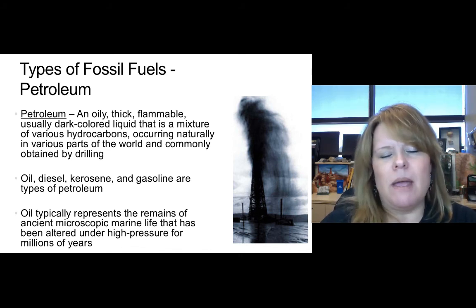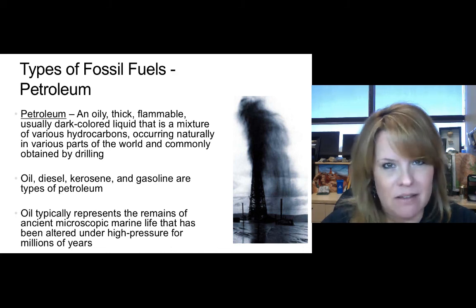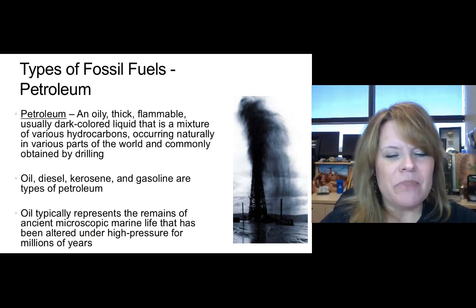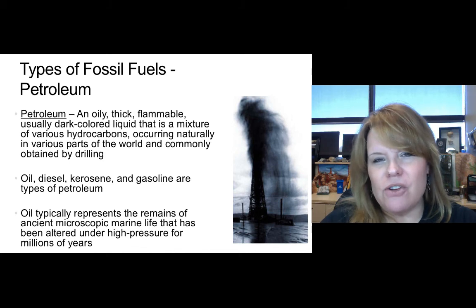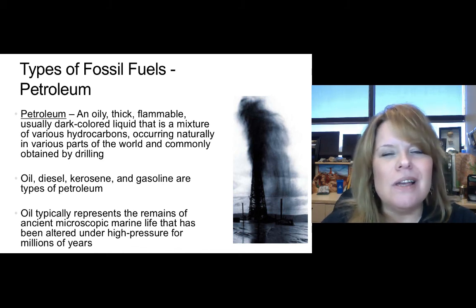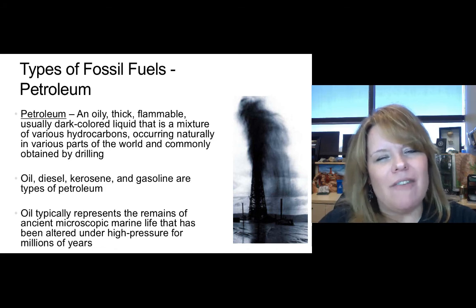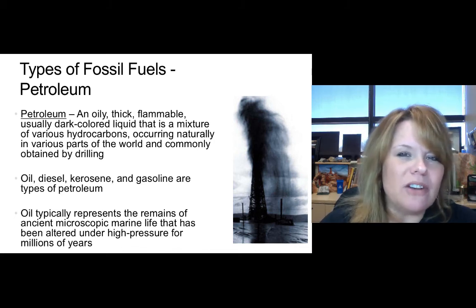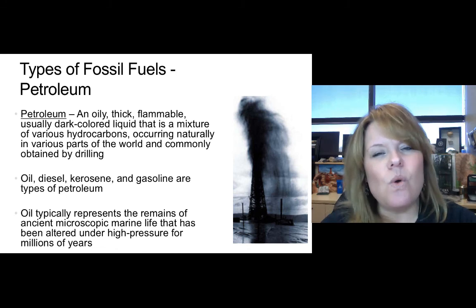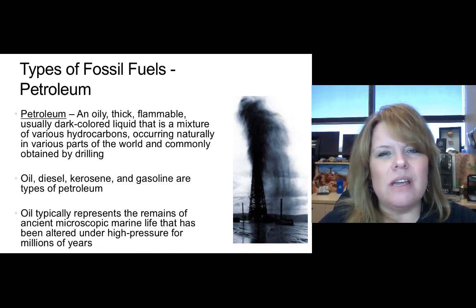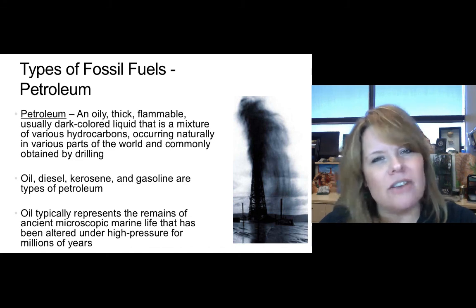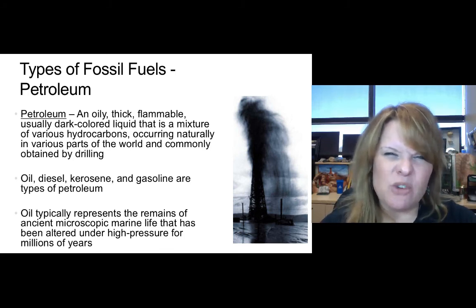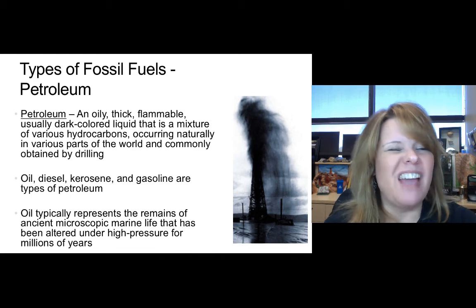Oil typically represents the remains of ancient microscopic marine life, such as foraminifera, that have been altered under high pressure for millions of years. Foraminifera look like tiny microscopic shells, and inside them they have a little bit of oil used for photosynthesis while they're alive. When they die they sink to the ocean floor, and as literally billions of these things accumulate — especially after a mass extinction event — new layers get put on top and it squishes that oil out, making a hydrocarbon layer.